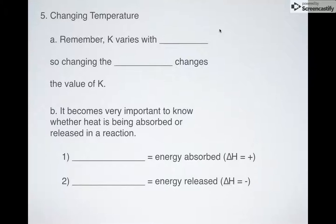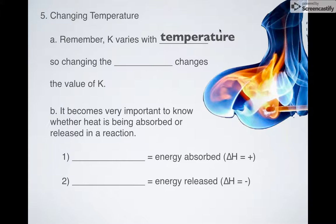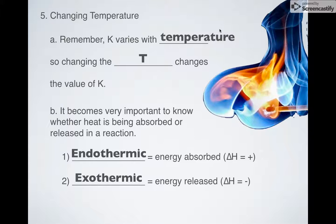What if you change the temperature? Remember, temperature and K are linked. If you change the temperature, K is going to change. It becomes very important to know whether or not we have a system that is absorbing or releasing heat. Endothermic means energy is being absorbed; exothermic means that energy is being released. We represent that by delta H. If delta H is a positive number, that means it's endothermic. If delta H is a negative number, that means it's exothermic. Positive means absorbing, negative means releasing.